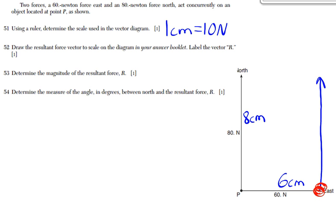So I have the tip of the east vector connected to the tail of the north vector. Now that we're tip to tail, I draw the resultant. Remember, the resultant always points start to finish. And since it says to label the vector R, it's pretty important to label the vector R. You're not going to get credit for a problem like this if you don't follow the instructions.